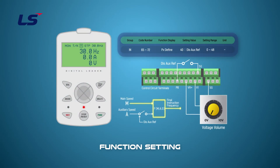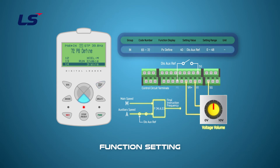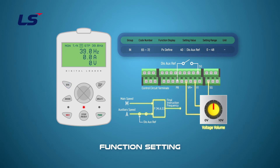Next, let's look at the setting method to disable the auxiliary speed function. The auxiliary speed varies according to the input value set in BAS1, but the function can be disabled if necessary. The auxiliary speed function can be disabled by programming one contact point among P1 to P8 of the inverter multifunction input terminal block. Here, P8 will be used as an auxiliary speed disable. Change in group 72 to 40 (disaux reference). When the input signal is entered to P8, the input signal for the auxiliary speed command is blocked, the auxiliary speed command is disabled, and it operates only with the main speed command.